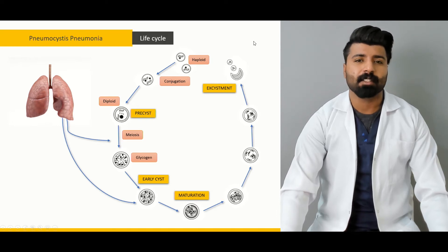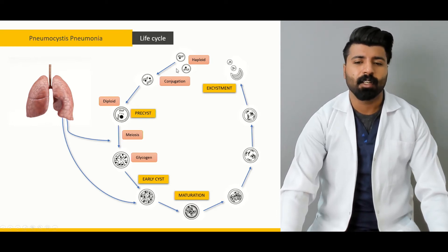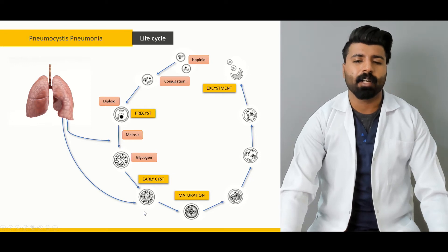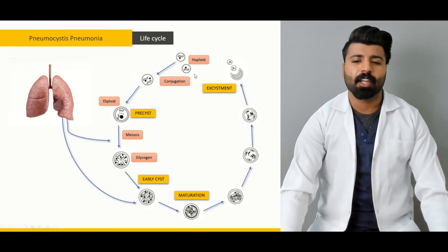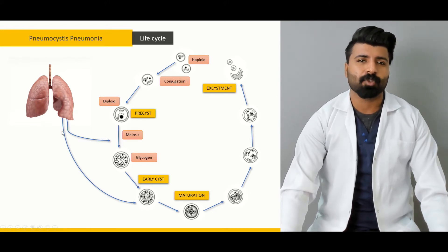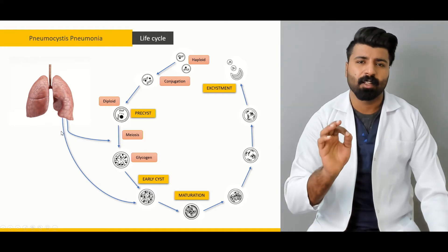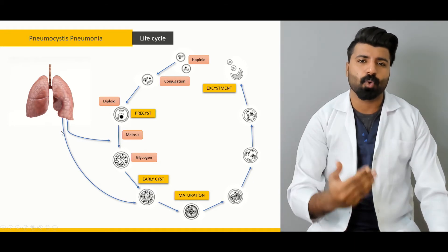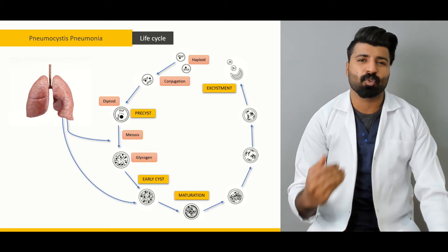Next, we'll talk about the life cycle of the organism. There are two life cycles: a sexual life cycle and an asexual life cycle. In the sexual life cycle, two haploids come together. In the asexual life cycle, only one cell divides on its own — it does not require any other cell, conjugation, or zygote formation.